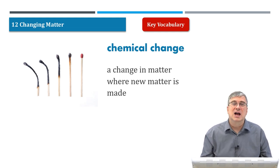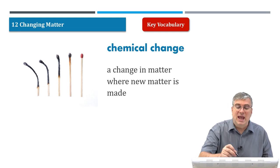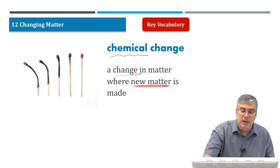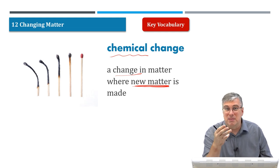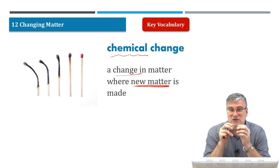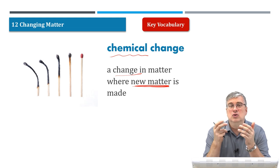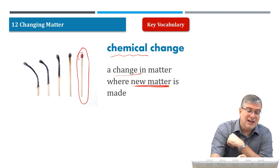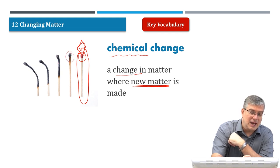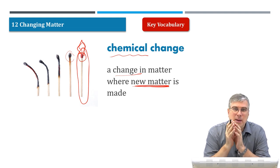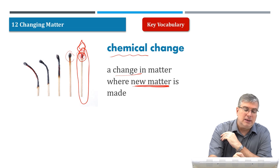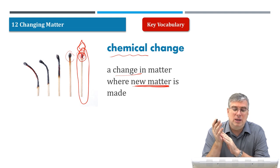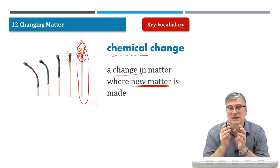Rust is not a physical change — it is a chemical change. A chemical change is a change in matter where new matter is made. The metal changes color to red or brown and becomes a new powder — that's not metal anymore, that's a new matter. Another good example: if you have a match and you light it, there's a flame. What happens? It turns black and the wood changes form. This isn't wood anymore — it's ash, it's carbon. The chemical property of the wood and the match head changes into new matter. That is what we call a chemical change — a change in matter where new matter is made. So we saw two different types of changes in matter.